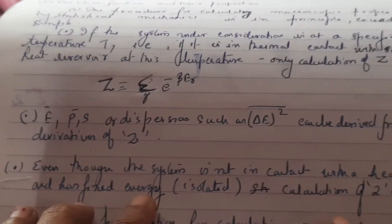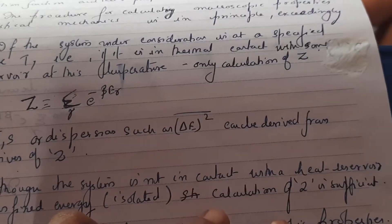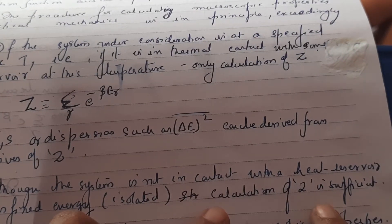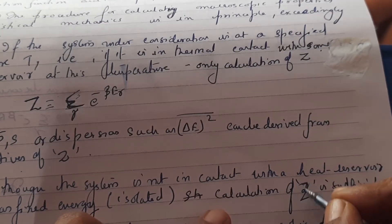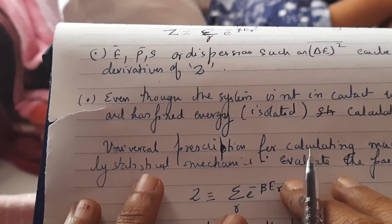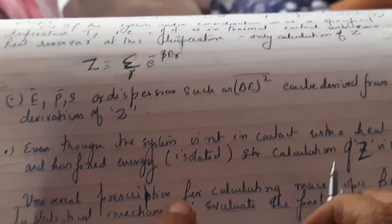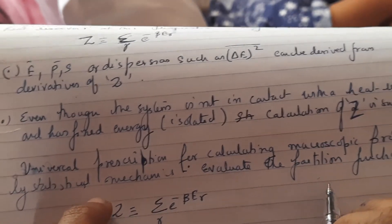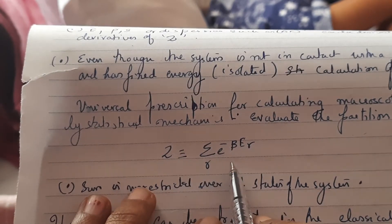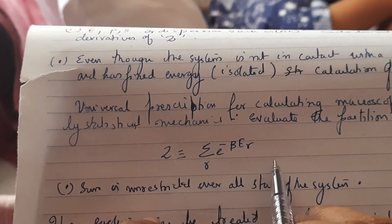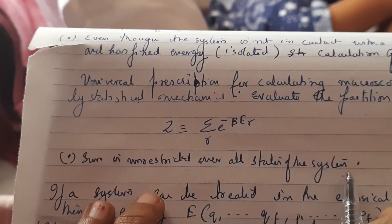Even though the system is not in contact with the heat reservoir and has fixed energy — that is, if it is isolated — calculation of Z is still sufficient to find the macroscopic properties. So the universal prescription for calculating macroscopic properties such as pressure is: first, evaluate the partition function. That is why the partition function is so important. Z equals summation over r of e raised to minus beta E_r, and the sum is unrestricted over all states of the system.